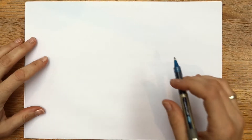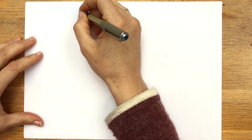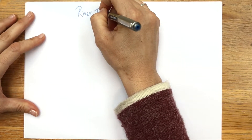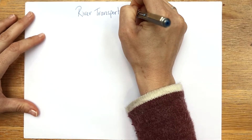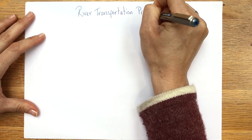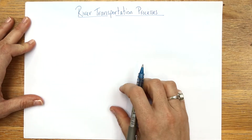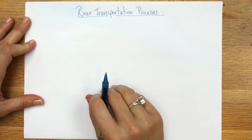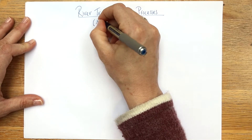Hey folks! Today we're going to look at river transportation processes, and I'm going to do this with a cross section of a meander. Pop the title in - this is Section C of Paper 1 for AQA, and it should be really helpful with your learning of rivers in general. We're going to cover a few processes, some landforms, and transportation too, all in a simple easy-to-remember infographic.